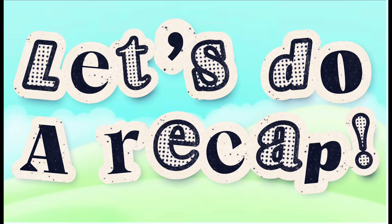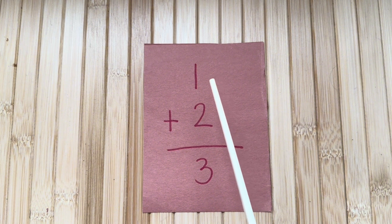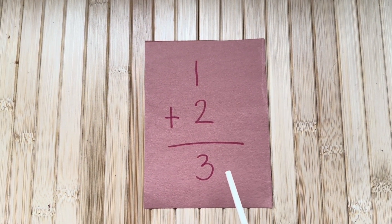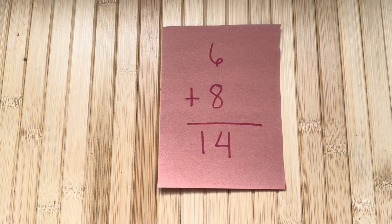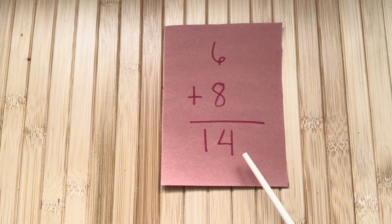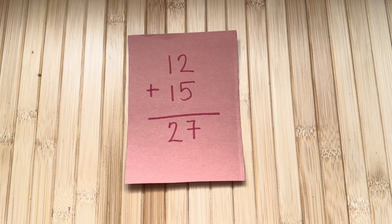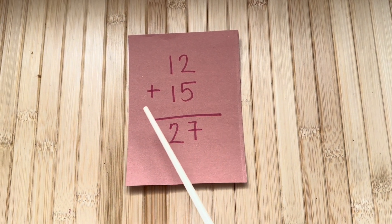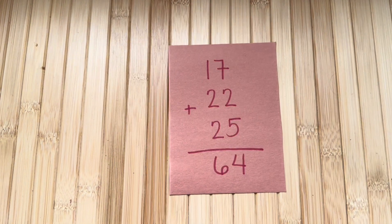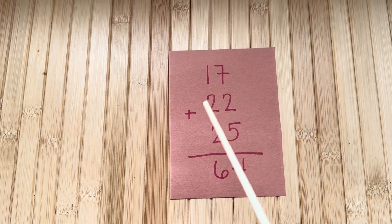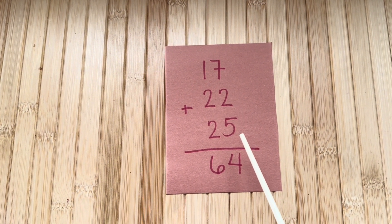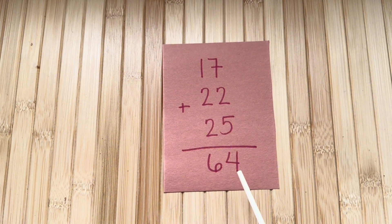Let's do a recap. 1 plus 2 is equals to 3. Next, 6 plus 8 is equals to 14. 12 plus 15 is equals to 27. 17 plus 22 plus 25 is equals to 64.